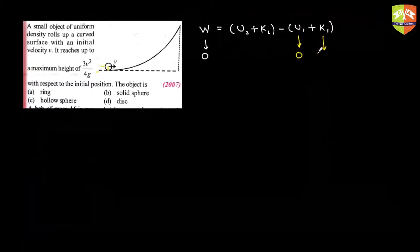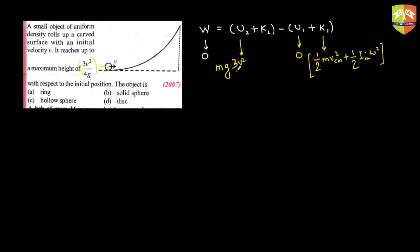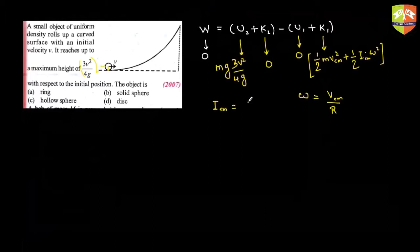Initial kinetic energy is (1/2)·m·v_cm² + (1/2)·I_cm·ω². The final potential energy is mg·h where h is given as 3v²/4g. K2 is zero since it comes to rest at the highest point. Since there is pure rolling, ω = v_cm / r. Substituting all of this, you get moment of inertia about the center of mass equal to m·r²/2.